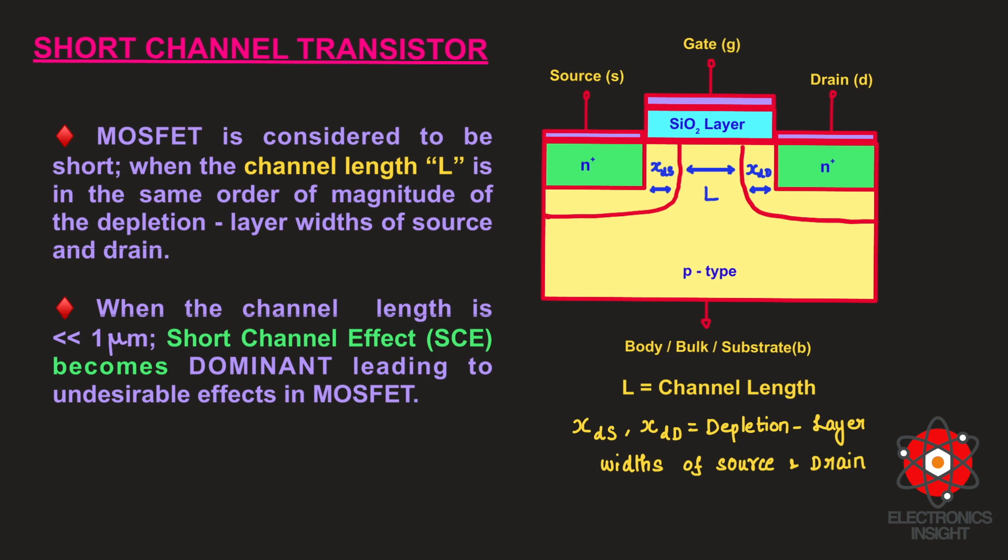In general, the MOSFETs have the channel length to be greater than the sum of drain depletion and source depletion width to avoid edge effects. Otherwise, a number of short channel effects appear. But these effects are related to CMOS downscaling, and channel or gate length has been one of the most significant parameters in device scaling.